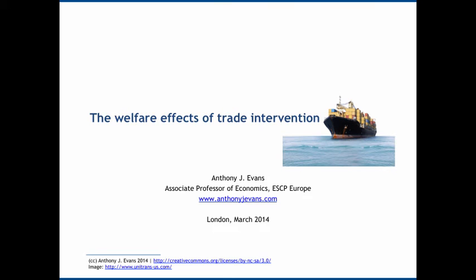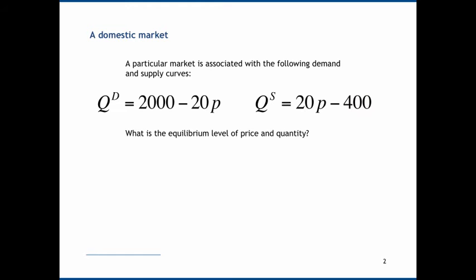In this video, we're going to use basic demand and supply analysis to see some of the welfare effects of trade intervention. We'll start off with a simple problem. Let's assume that a particular market has the following demand equation and the following supply equation: quantity demanded is equal to 2000 minus 20p, and quantity supplied is equal to 20p minus 400.